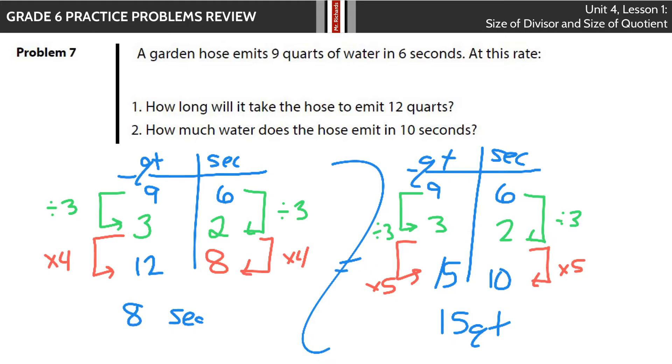In our last question, we go back to the table method because I think that's kind of a fun way to finish. Nine quarts of water in six seconds. At this rate, how long will it take the hose to emit 12 quarts, and how much water does the hose emit in 10 seconds? You could get a unit rate here as well. You could have divided the 9 by 6 to get 1.5 quarts in 1 second.